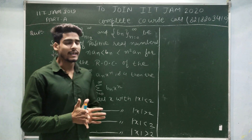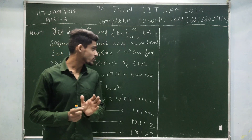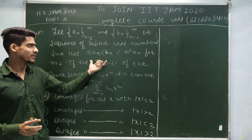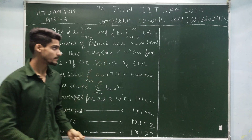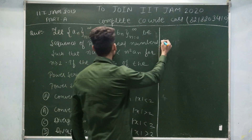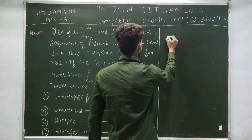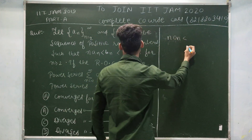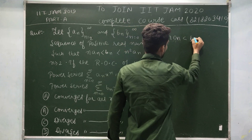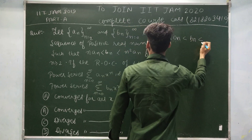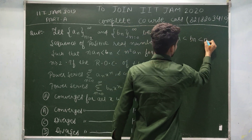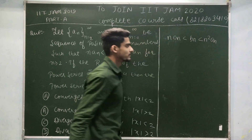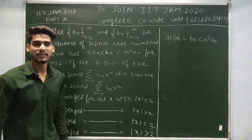To solve this question, we don't need to think too hard. We just need to use the given condition. The given condition is: n·aₙ < bₙ < n²·aₙ. This is given to us.